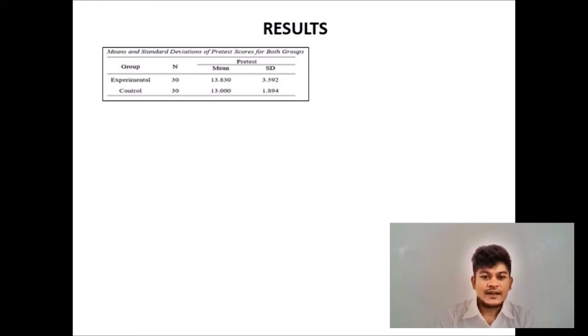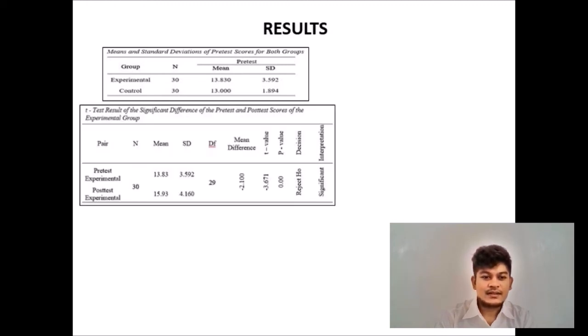On the other hand, the t-value between the pre-test and the post-test of the experimental group was minus 3.671. As reflected, the mean of post-test scores of the experimental group was higher, which is 15.93, than the mean pre-test scores of the experimental group, which is 13.83. With this, the null hypothesis is rejected in favor of the research hypothesis. Subsequently, p-value is less than 0.05. Furthermore, the result means that there is a significant difference between the pre-test and the post-test scores of the experimental group.